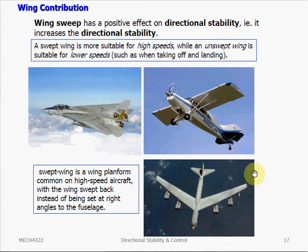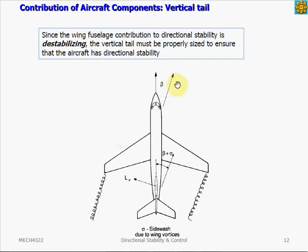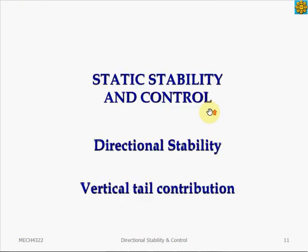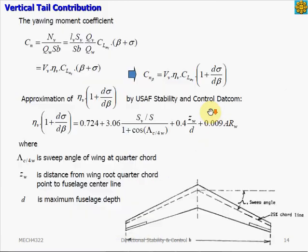We can explain how wing sweep contributes to directional stability by looking at this diagram. In a yaw disturbance, the nose moves out of the relative wind airflow, producing a side slip angle. The wing on the side into which the relative airflow is coming has a higher effective aspect ratio due to the swept-back configuration, generating more lift — and more lift also means more drag. This wing then drags the nose back into the relative flow, contributing to directional stability.